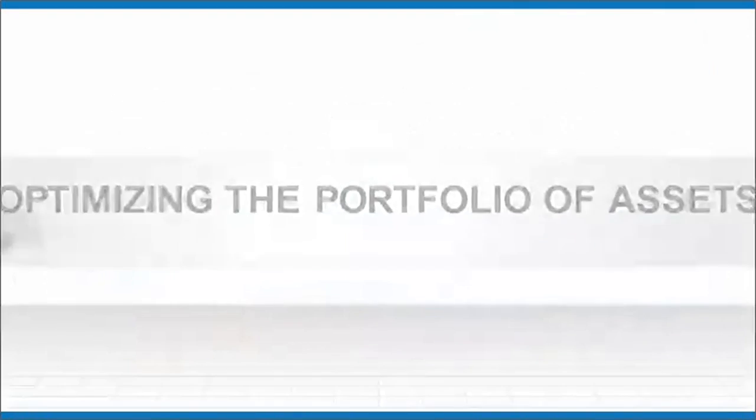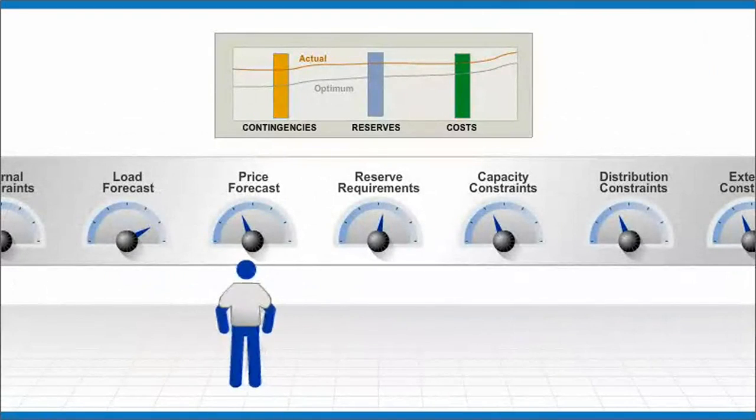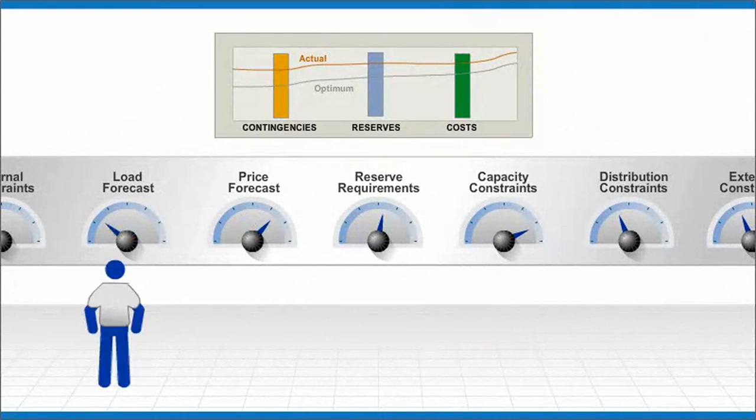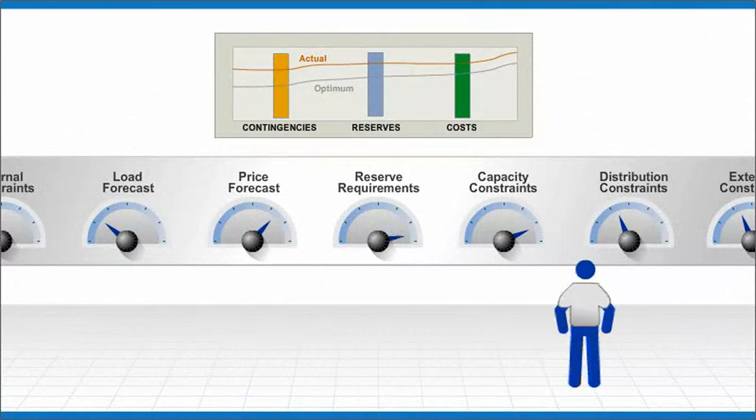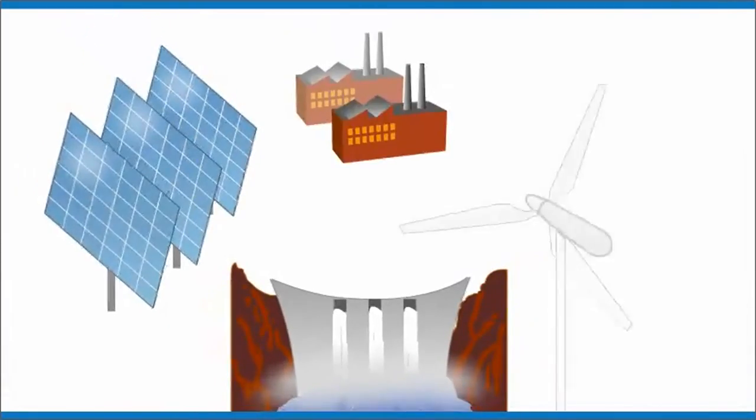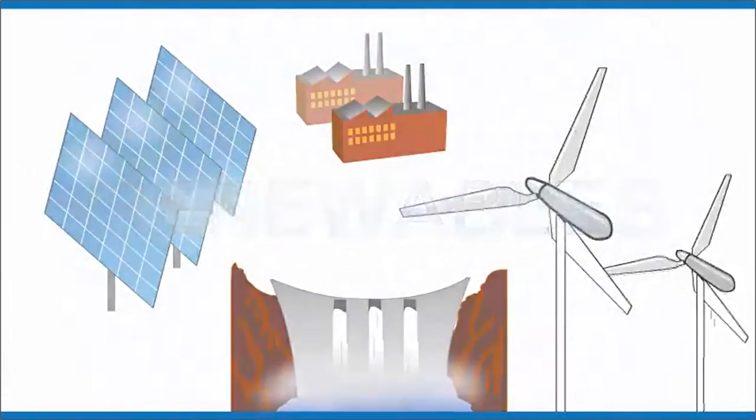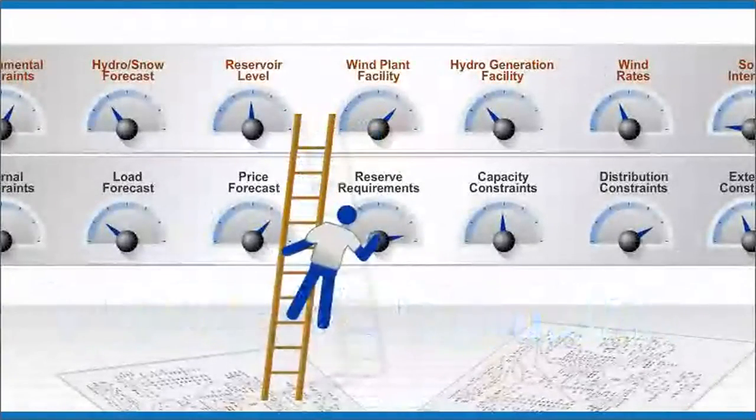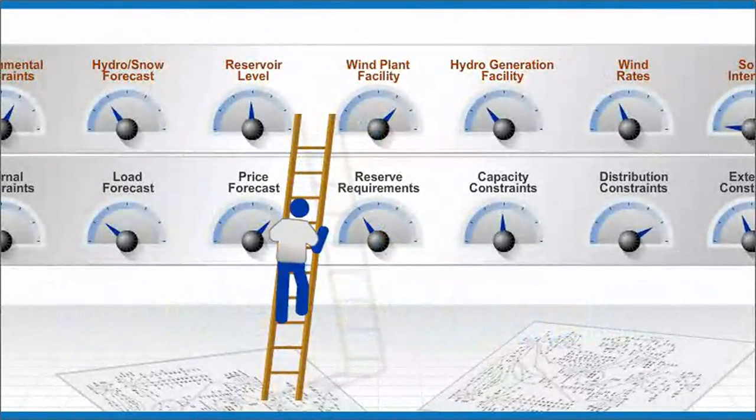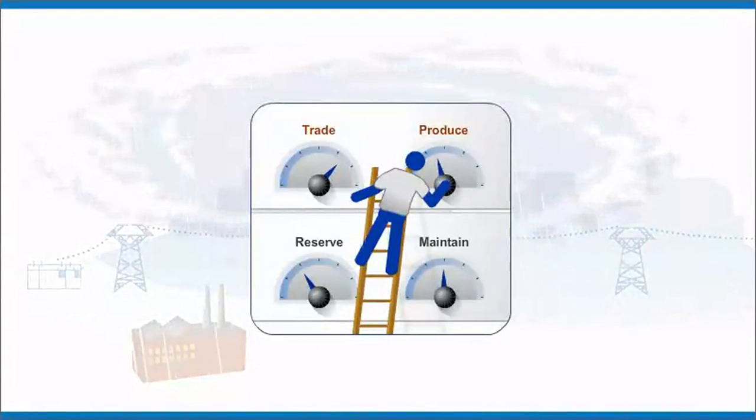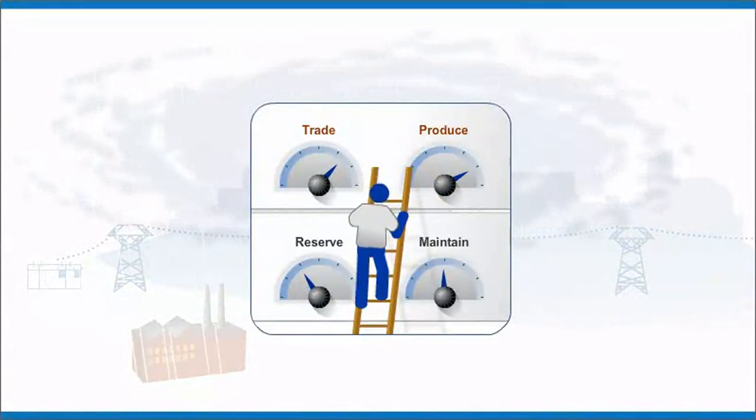Optimizing the portfolio of assets has always been a complex task with so many constraints and regulations that push utilities toward higher contingencies, reserves, and costs. When the portfolio contains renewables, you have even more complexity and volatility and constraints and regulations, combined with a lot more unpredictability, which requires re-running the optimization routine much more often.